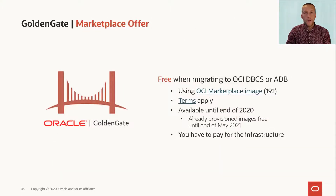If you're migrating your database into one of the cloud services of the Autonomous Databases, we have an offer for you. You can use GoldenGate at no extra cost, with no license for GoldenGate. You only pay for the compute infrastructure that you need to run the OCI Marketplace image. Please be aware that some terms apply and you have to use the OCI Marketplace image. This offer is available until end of 2020, but for images that are already provisioned, you have the offer until March 2021.